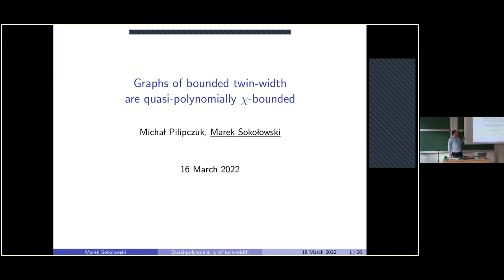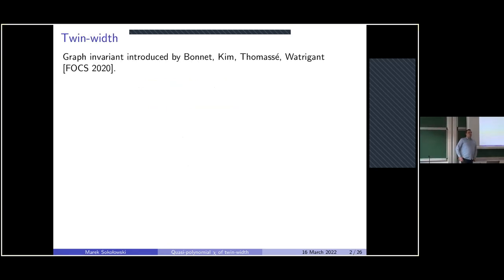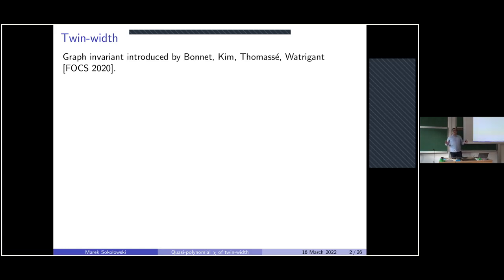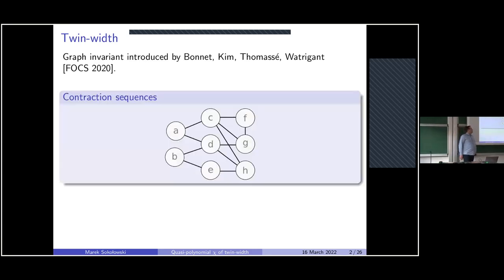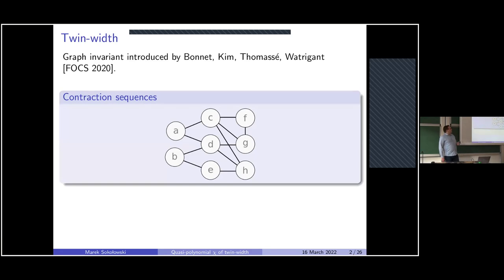Let's start with the definition of twin-width. Twin-width is a fairly fresh graph invariant introduced in 2020 by Bonnet, Kim, Thomassé, and Watrigant. It can be thought of as a broad generalization of co-graphs that captures a very robust class of graphs. Twin-width for graphs is usually defined in terms of contraction sequences. In our example we have a graph with eight vertices, and a contraction sequence is defined by a series of contractions of vertices.